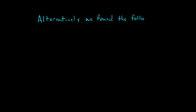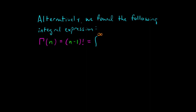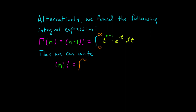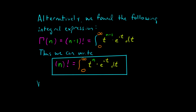There's another way that we could define the gamma function and the factorial function. We found, through alternative means, the following integral form: gamma of n, which equals n minus 1 factorial, equals the integral from 0 to infinity of t to the n minus 1 times e to the negative t, dt. We can also write n factorial equals the integral from 0 to infinity of t to the n times e to the negative t dt. This integral was derived through completely different means than the infinite product form.